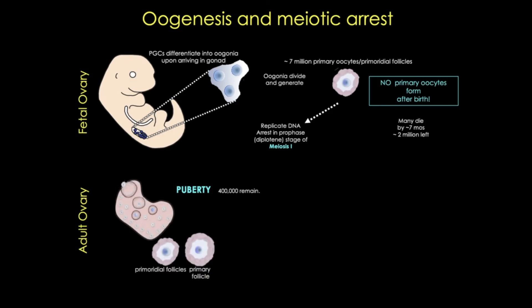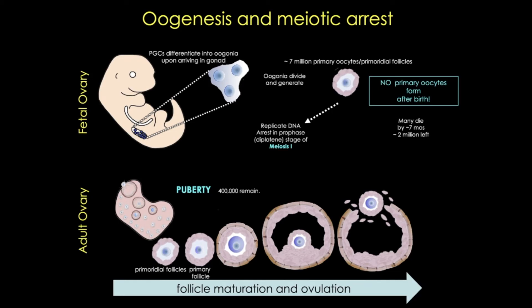In each cycle, the follicular epithelium of a small group of primordial follicles will thicken, converting them to primary follicles. One of these will gain primacy and begin to mature and develop, and under hormonal control will actually resume and complete meiosis I, enter meiosis II, and right before ovulation, the oocyte will arrest at metaphase of meiosis II. It stays this way even after ovulation — it only completes when it becomes fertilized, specifically when the sperm cell membrane fuses with the oocyte cell membrane. You can check out my video on fertilization to see what happens next, and for more details on the ovarian cycle and follicular development, check out my video on the ovaries and ovarian cycle.